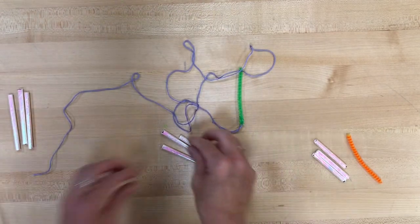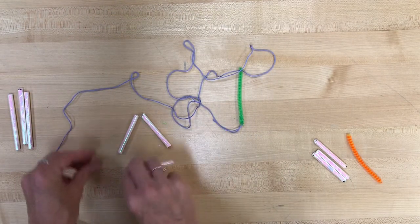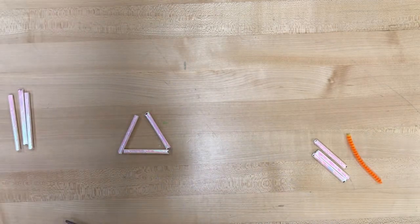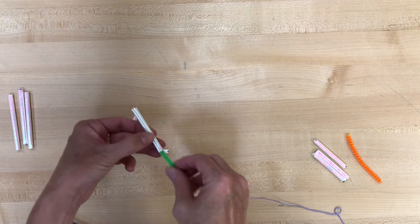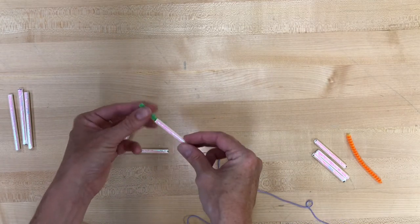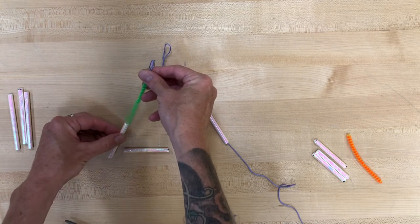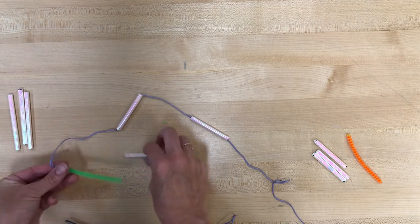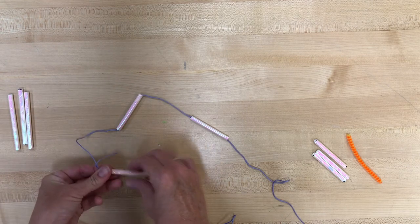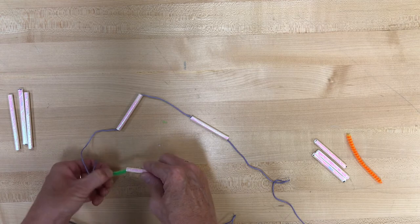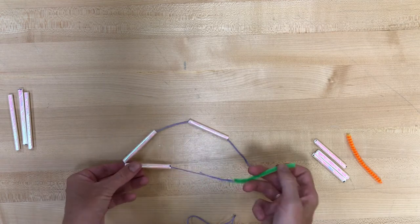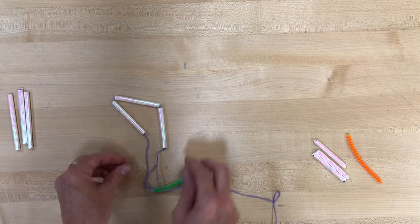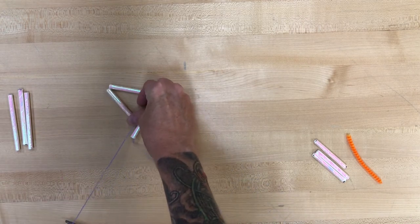And we are gonna start with three of the shorter straws. I'm using all the same color, you definitely do not have to do that. But we want to put them in kind of a triangle shape. And then taking your pipe cleaner needle, you're going to thread your embroidery thread through each of those straws. Once you have done that, pull that through, kind of form it back into the triangle shape. And you're gonna pull the thread almost all the way through.